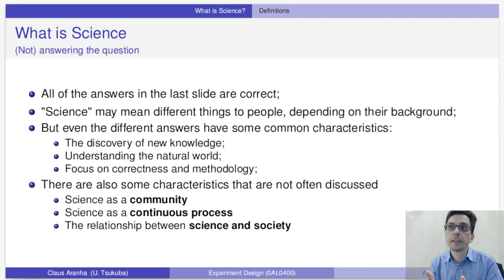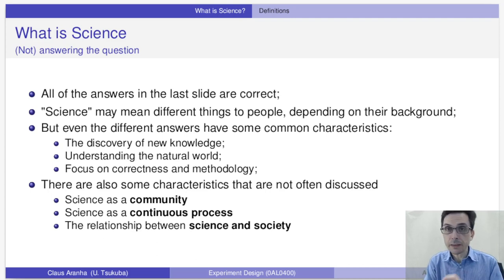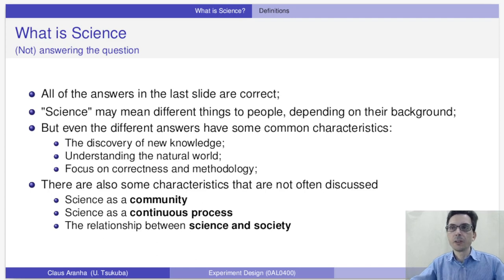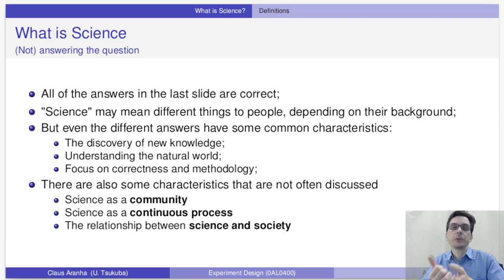On the other hand, there are also some ideas that are usually not included in student answers, but I think are very important to understand what we call science. One of them is the role of science as a community. When I talk about science as a community, I'm talking about the exchange of ideas, which is an important part of the scientific process, and this exchange of ideas requires a community.